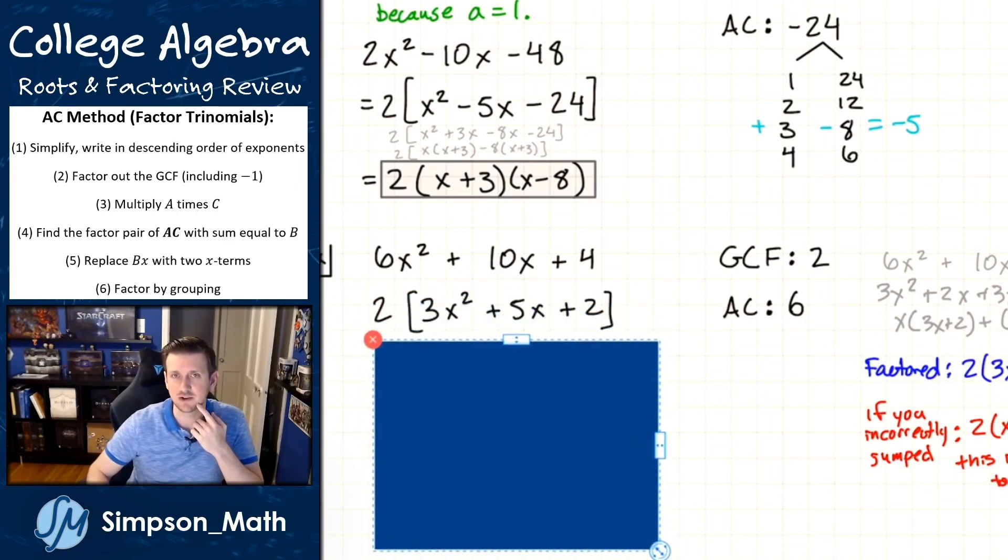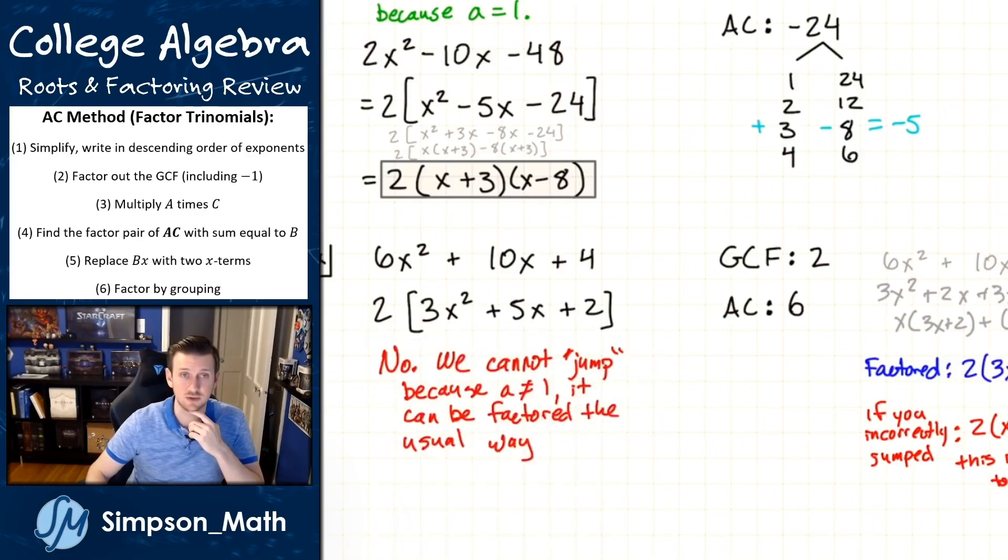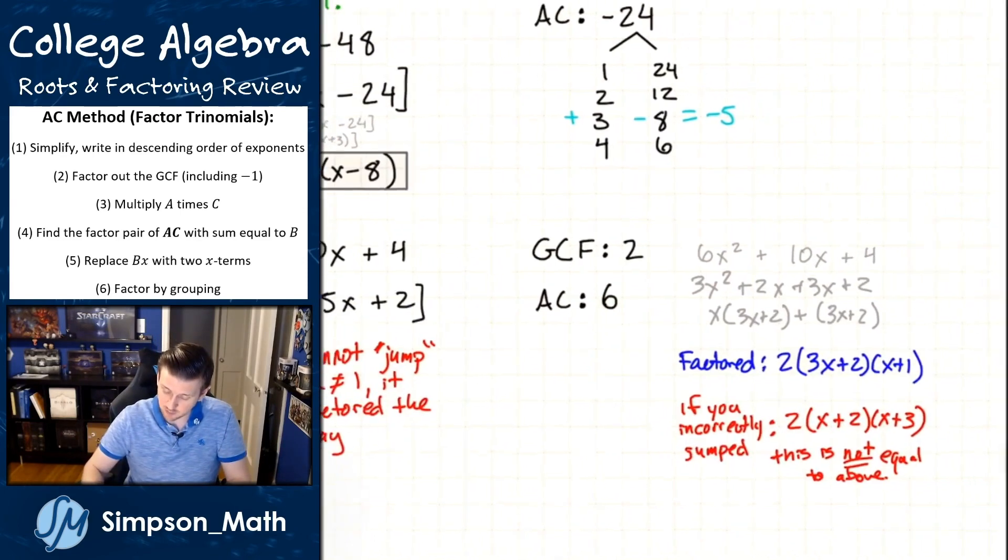So that means after I factor out the two, what's my A? Three. So can I jump? No, we cannot just jump and skip those steps, because the A is not one.